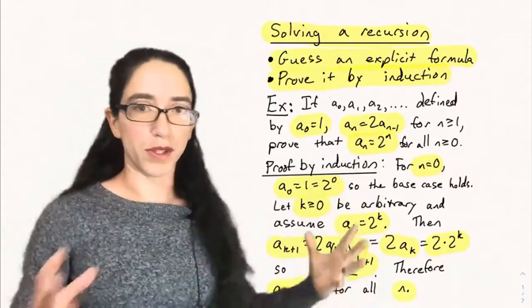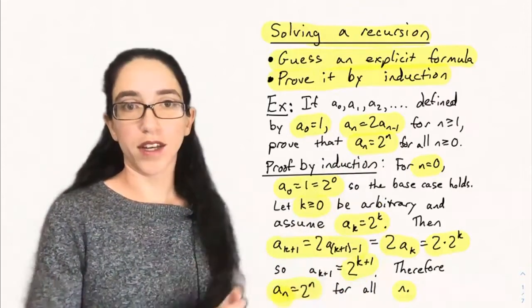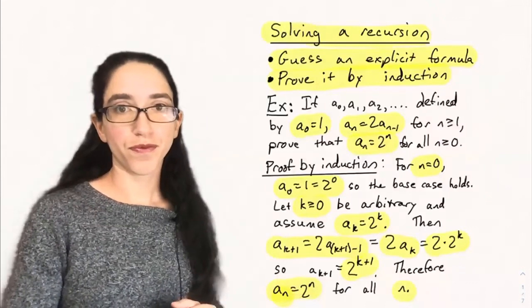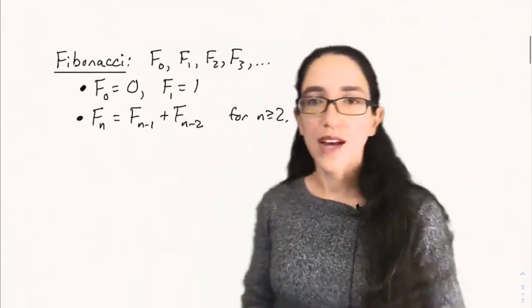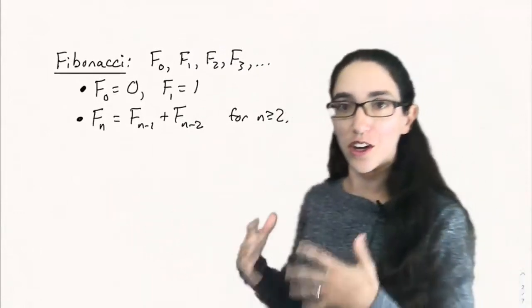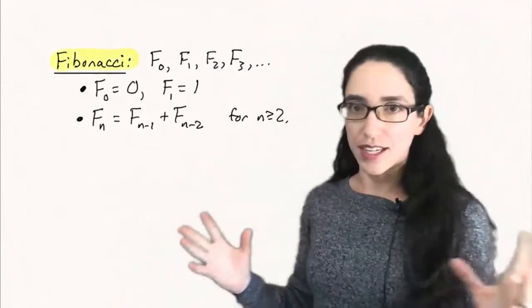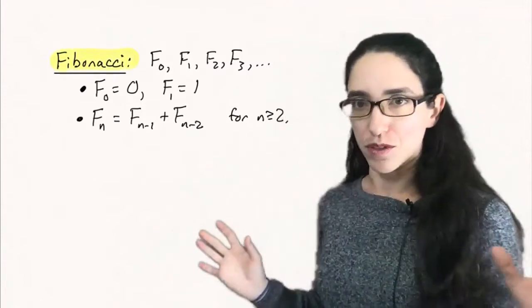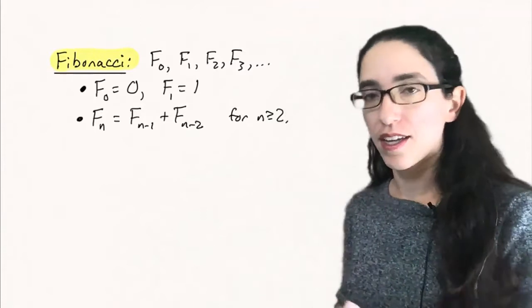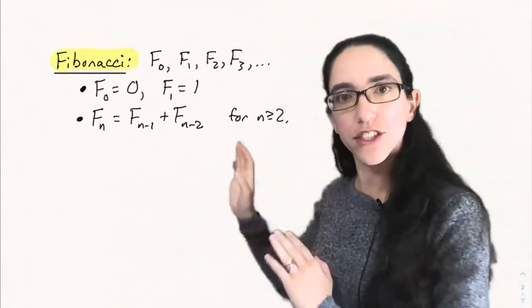In general, you can do inductive proofs of this form to show that a formula satisfies a recursive definition. So now let's look at one of the most famous examples of recursions in all of mathematics, which is the Fibonacci sequence. The textbook has many examples of where the Fibonacci sequence comes up in nature and in mathematics, but right now, let's just focus on the definition.